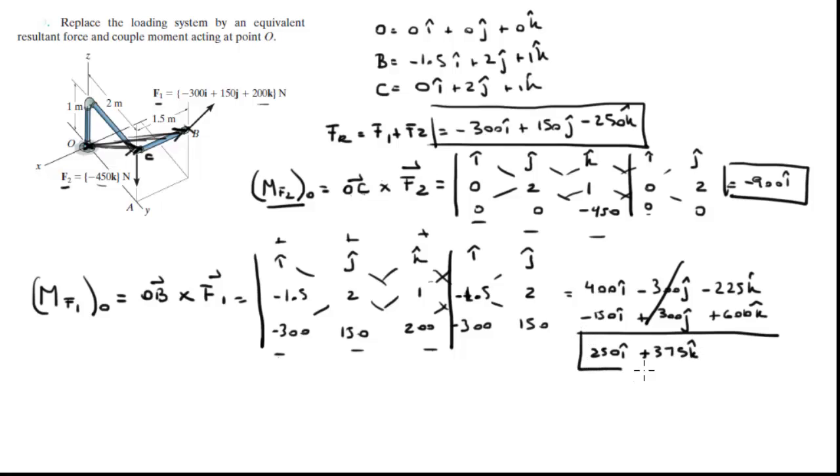So the sum of the moment is equal to this negative 900i, you add it to this 250i plus 375k, and you get that the sum of the moments is minus 650 in the i plus 375 in the k. So final answer for the moment and final answer for the resultant force acting on this pipe assembly.